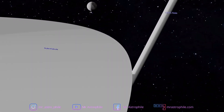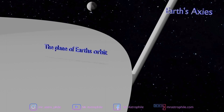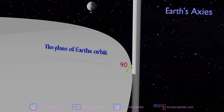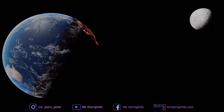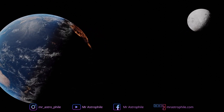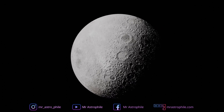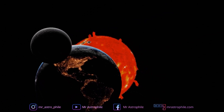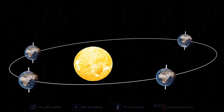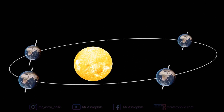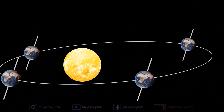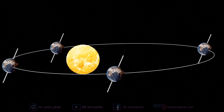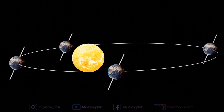Earth has seasons because our planet's axis of rotation is tilted at an angle of 23.5 degrees relative to the plane of Earth's orbit around the Sun. When a Mars-sized object collided with Earth 4.5 billion years ago, it knocked off a chunk that would become the Moon. It also tilted Earth sideways a bit, so Earth has seasons because its axis doesn't stand up straight.